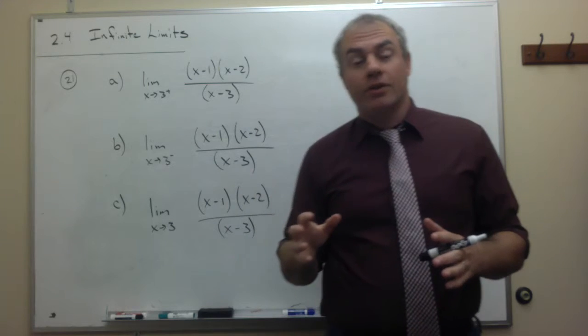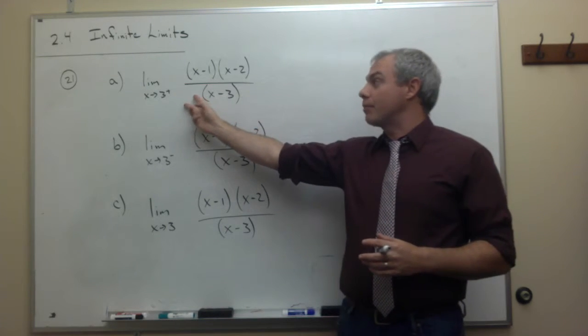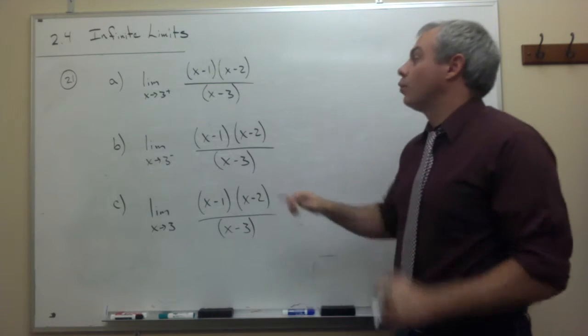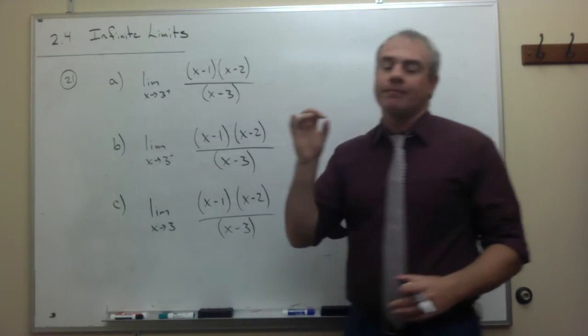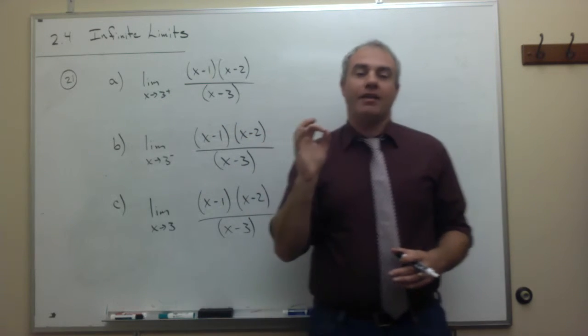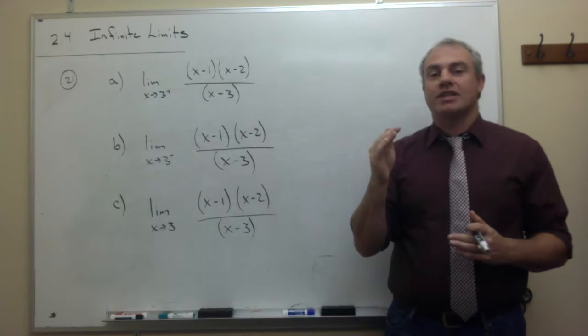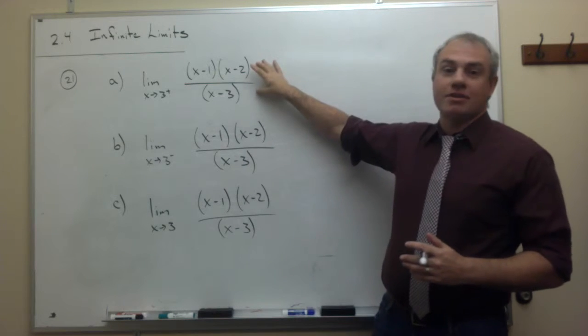If we're dealing with a vertical asymptote, there are two possible answers to this limit problem. It's either positive infinity or negative infinity. So, we're coming from the right-hand side, so we want to take a number just slightly bigger than 3 and see what happens here.